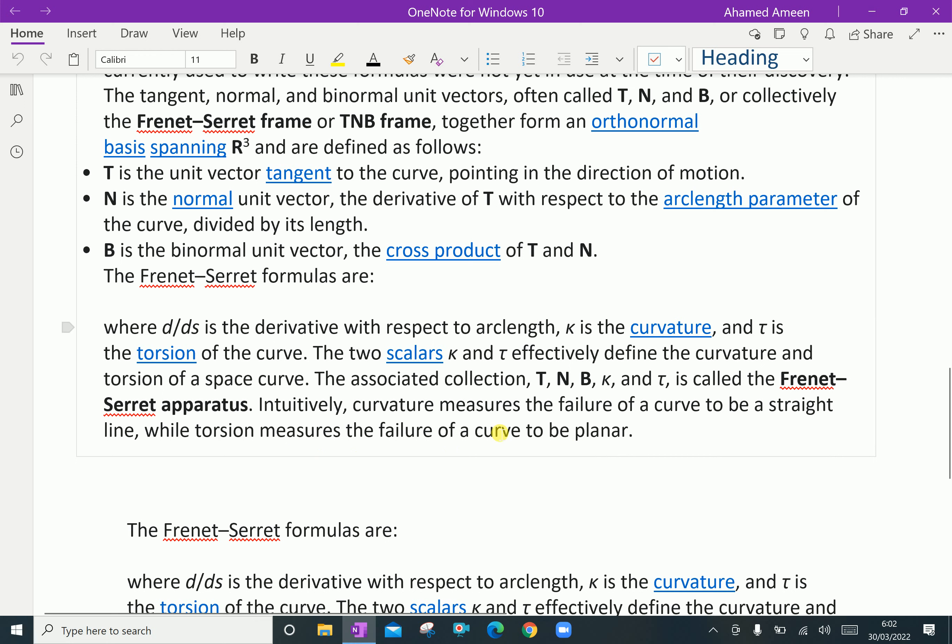Intuitively, curvature measures the failure of a curve to be a straight line. If it is a straight line, there is no curvature, that is, curvature is zero. While the torsion measures the failure of a curve to be planar. In a planar curve, there is no torsion.